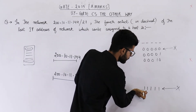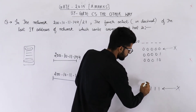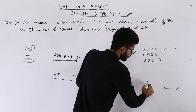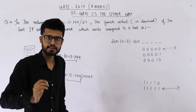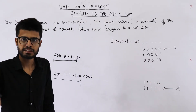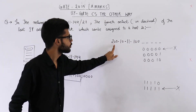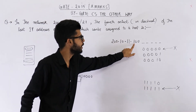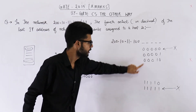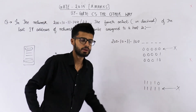It will be the address one before the broadcast address. That means the host bits will be 1, 1, 1, 1, 0. So the last IP address that can be assigned to a host is 200.10.11.10011110.